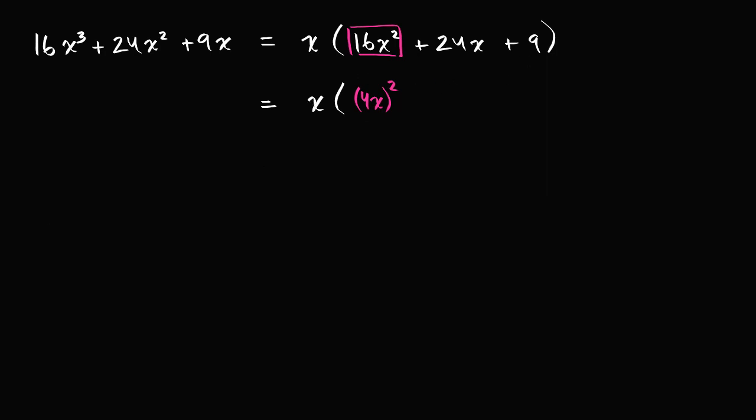And then we have a 9 over there, which is clearly a perfect square. And that is 3 squared, 3 squared. And when we look at this 24x, we see that it is 4 times 3 times 2.